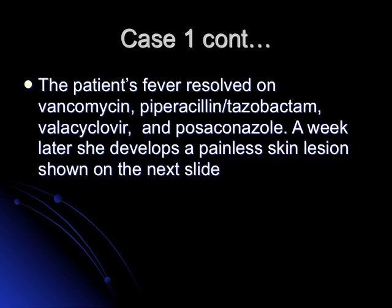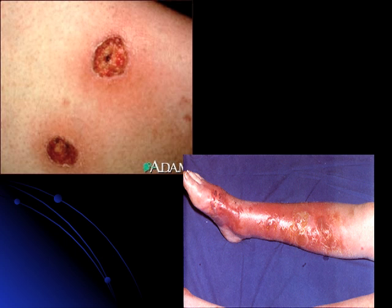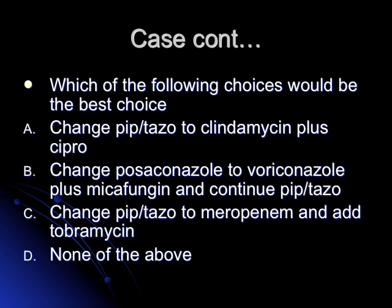Moving back to case one: the patient resolved with vancomycin, piperacillin-tazobactam, valacyclovir, and posaconazole. A week later she developed a painless skin lesion and cellulitis. In the differential for cellulitis with an isolated skin lesion in a patient with prolonged neutropenia, consider ecthyma gangrenosum. The best choice is meropenem plus tobramycin, targeting Pseudomonas.